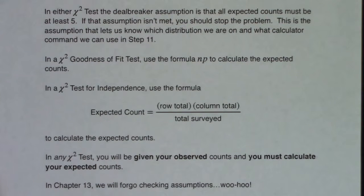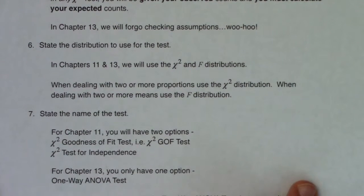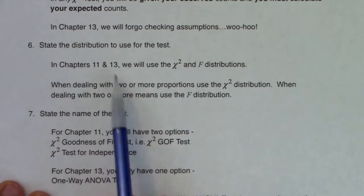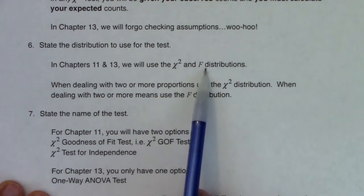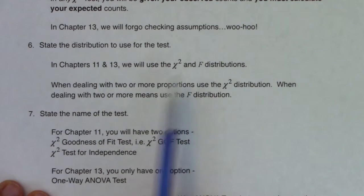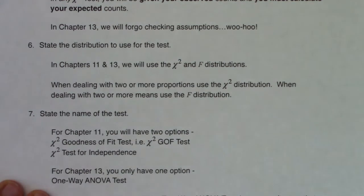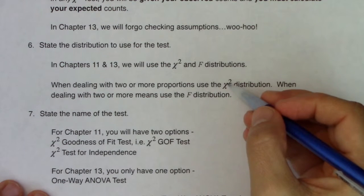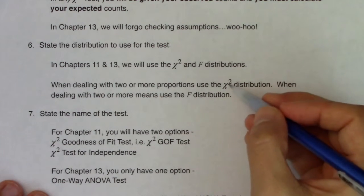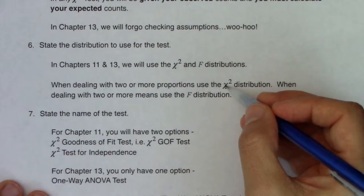In chapter 13, we're actually going to skip checking assumptions — that's going to be great. For step six, state the name of the distribution: in chapter 11 it's chi-squared; in chapter 13 it's F. For step seven, name the test: chapter 11 gives you the goodness of fit test or the test for independence; chapter 13 gives you one-way ANOVA. Note that chi-squared can be used even with just two proportions — it's actually easier than a two-sample proportion z-test, whose assumptions are more obnoxious to check.